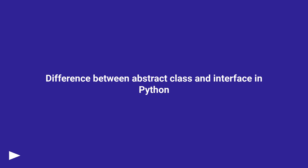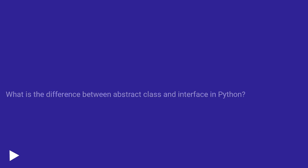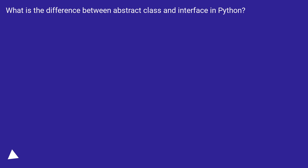What is the difference between Abstract Class and Interface in Python?